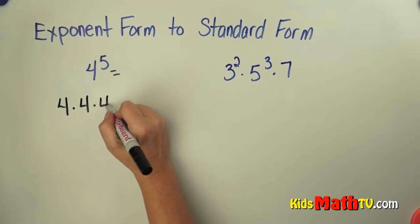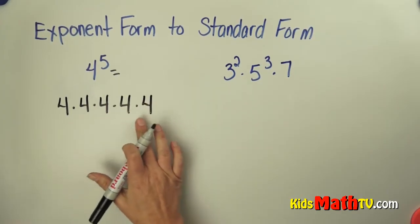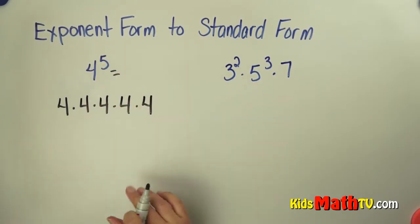So there's 1, 2, 3, 4, 5. 1, 2, 3, 4, 5 fours. That's what that says.